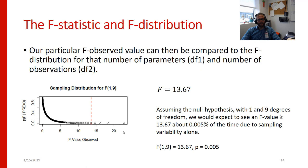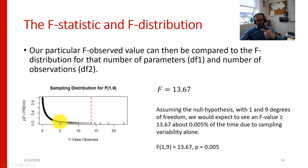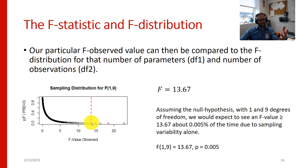We would probably conclude that people who have the flu might actually have higher body temperatures than people who don't, because it is very unlikely that we observed this sample just by chance given our assumptions. This would be strong evidence against the null hypothesis. An F of 1 would be perfectly likely, an F of 2 is starting to get more unusual, but an F of 13.67 makes it pretty unlikely that this arose due to sampling variability. We would conclude there's probably something systematic — that people with the flu do indeed have a higher body temperature — and this is a statistically interesting result.